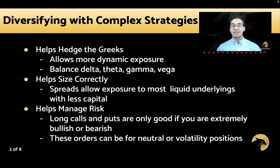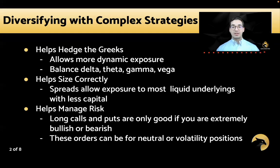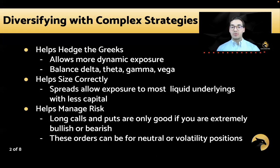Diversifying with complex strategies also helps you size correctly, particularly with smaller accounts under $5,000 or $10,000. Sizing for success is important to mitigate drawdowns and minimize risk without sacrificing returns by trading under 5% of your portfolio in a given position — ideally 2% or 3%. For example, a Tesla option might cost $4,000 or $5,000, so unless your account exceeds $100,000–$200,000, you're likely overexposed buying calls or puts. Spreads and other strategies allow you to gain the exposure you want without being overexposed in terms of delta value and capital at risk.